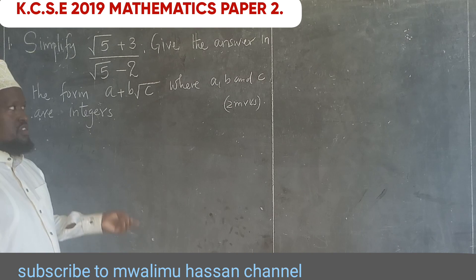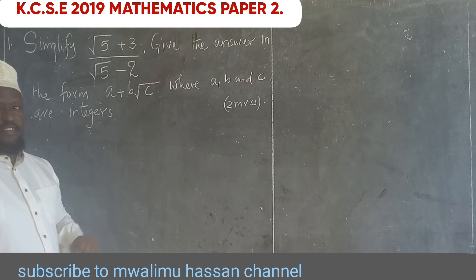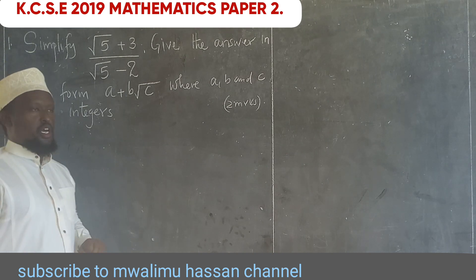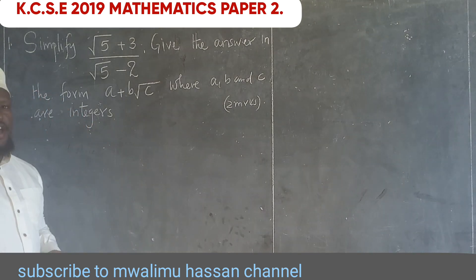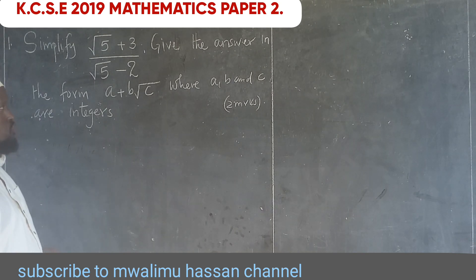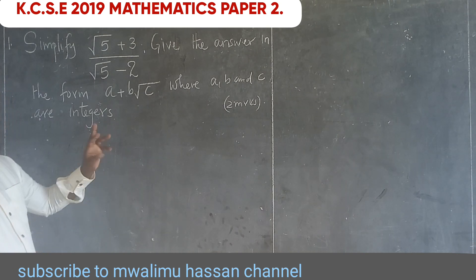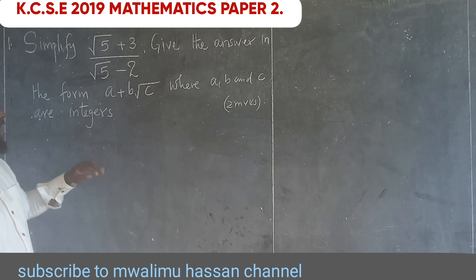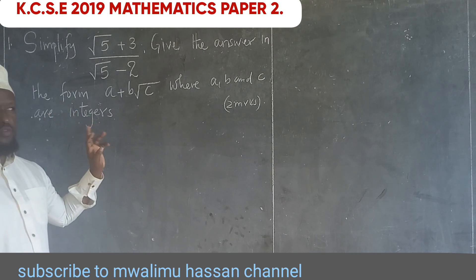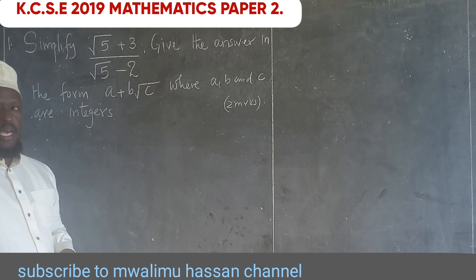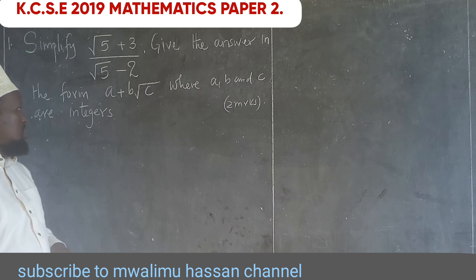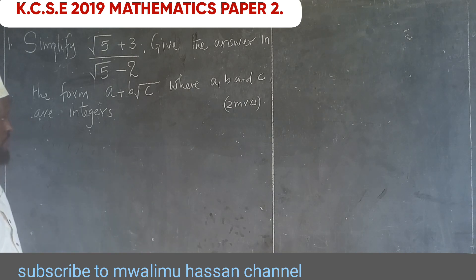We will start with the first question, which reads: simplify (√5 + 3) divided by (√5 − 2), and give the answer in the form A plus B root C, where A, B, and C are integers.